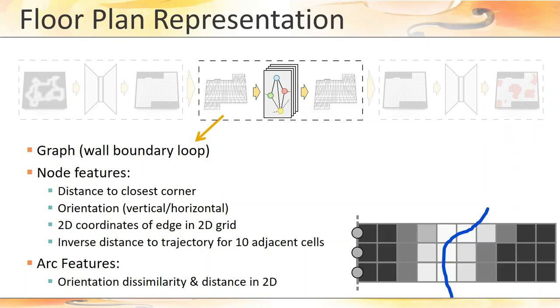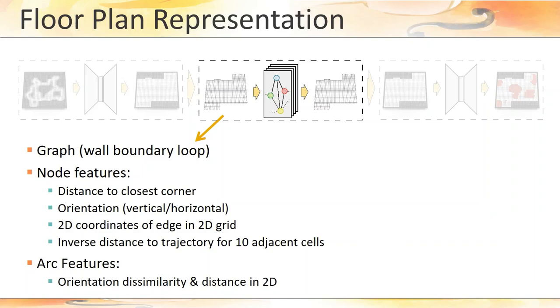So for the node pointed to by the red arrow here, this would be the block of 10 cells here. We also set two features on each arc of the graph based on the properties of the edges corresponding to the arc endpoints. These are a measure of dissimilarity between the edge orientations and the distance between the edge positions of the 2D grid. The output of the network is also a graph with the very same structure, but with only one feature per node, that is a binary label denoting whether the corresponding edge on the grid belongs to a wall or to a door.